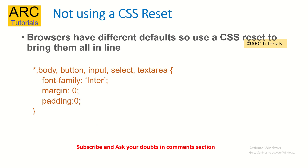The first and foremost thing is not using a CSS reset. Understand that each of these browsers that we work with — be it Chrome, Firefox, Internet Explorer, or Edge — all of these have their different defaults. So always start with writing a CSS reset so that you bring them all aligned and in line so that it works correctly in that particular browser. The first and foremost rule is to always reset the CSS.